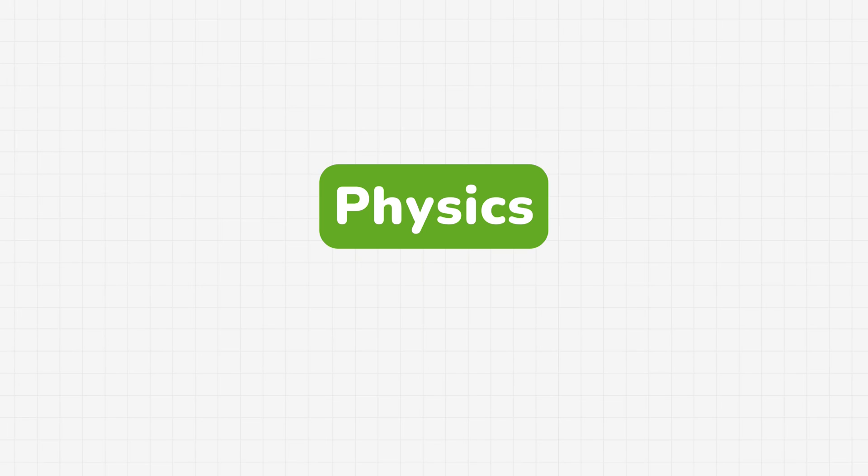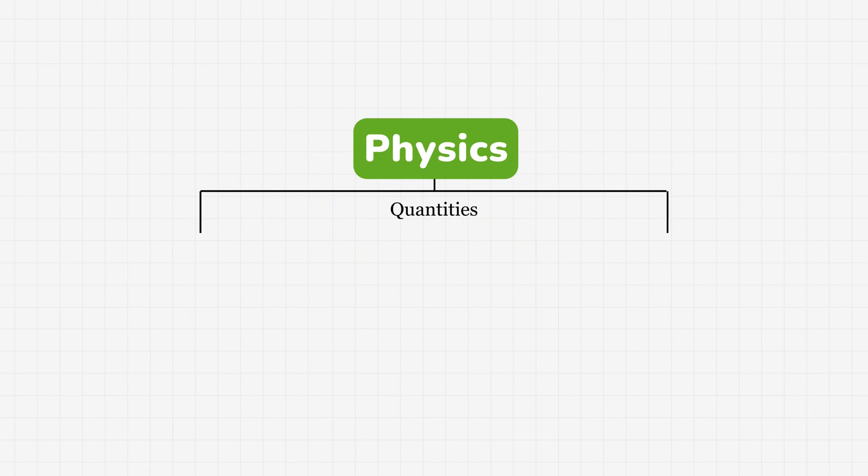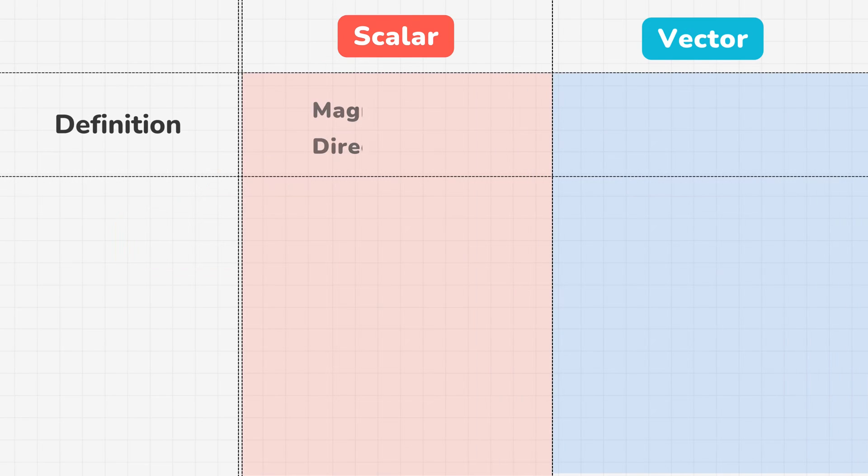So in physics, quantities are defined in two categories: scalars and vectors. Scalars are quantities with magnitude but not direction, whereas vectors have both magnitude and direction.